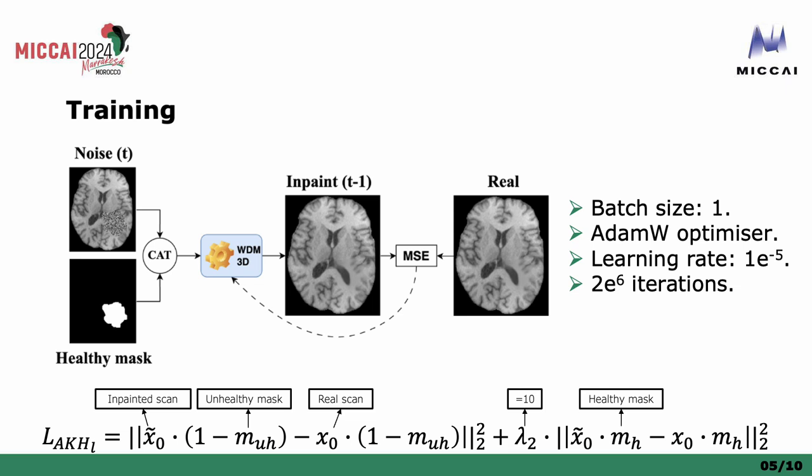Then, the generated scan is compared with the real scan using mean-square error. It's important to note that in our best solution, the healthy tissue was never considered to compute the loss. It was noticed that by including it, the model was learning to generate unhealthy tissue in some situations. So the loss function is composed of the mean-square error of the real and inpainted scan without the healthy tissue, and the inpainted region only, with a weight of 10.